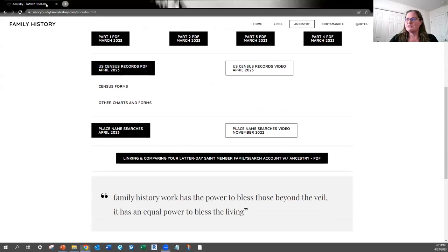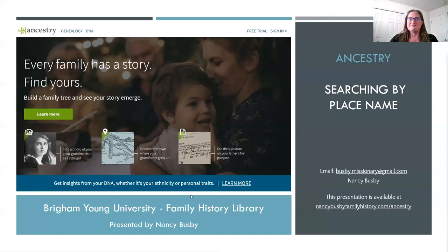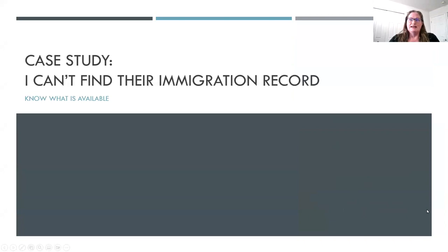Today I'm going to be talking about doing searches using place names primarily, and often in combination with a surname for family. The first thing I want to go over is a case study that shows an example of a time where I couldn't find an immigration record, and some strategies I used to try to find that record.